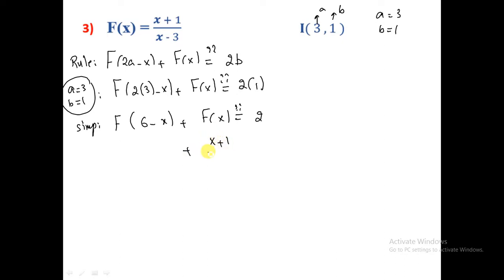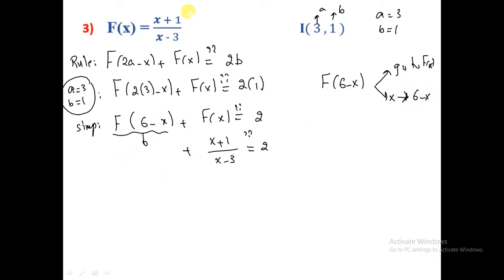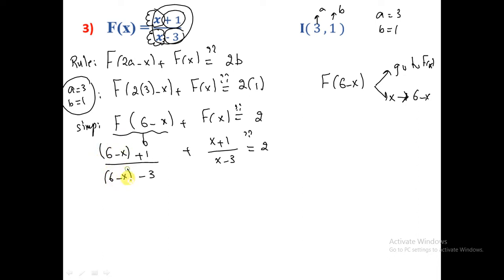The function f(x) = (x+1)/(x-3). We need to find f(6-x) by substituting (6-x) in place of every x. The numerator becomes (6-x+1) = (-x+7) and the denominator becomes (6-x-3) = (-x+3). So we have (-x+7)/(-x+3) + (x+1)/(x-3) = 2. The denominators differ only in signs.